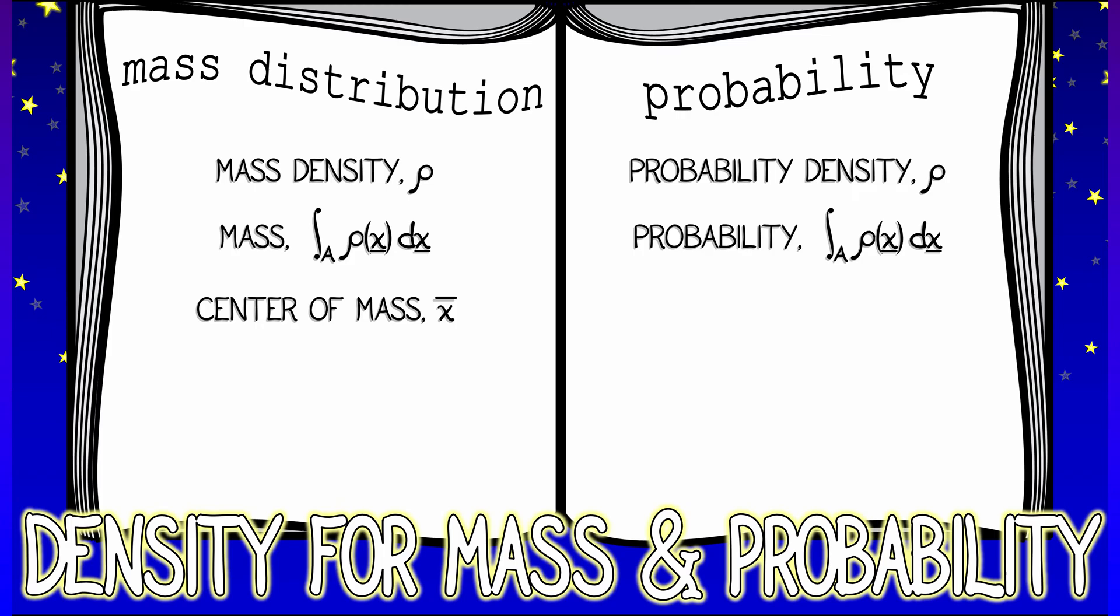If I look at the center of mass x bar, how do you get that? You integrate x times rho of x dx. That is exactly the same thing as the mean or the expectation of your random variable.